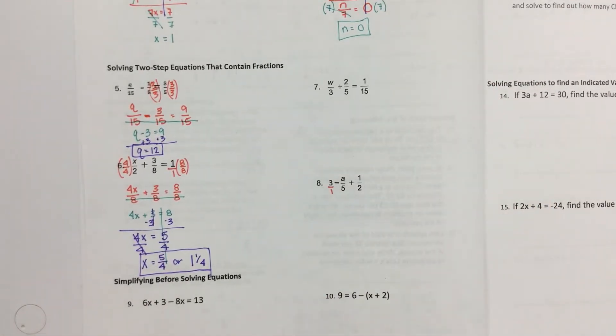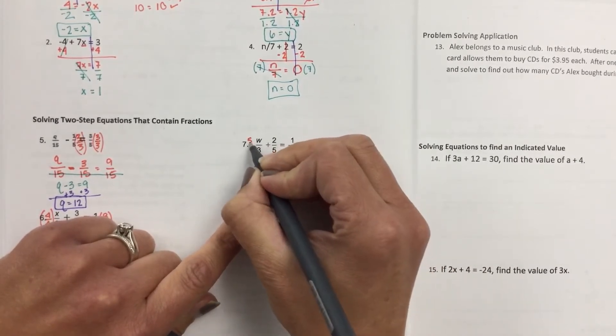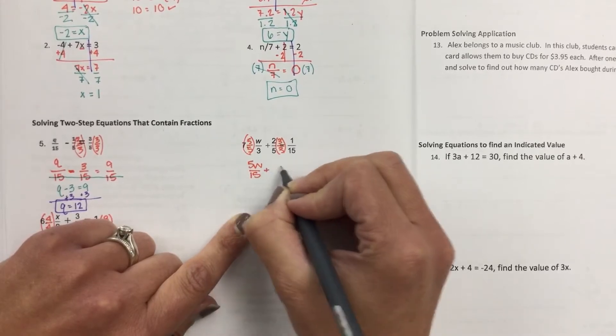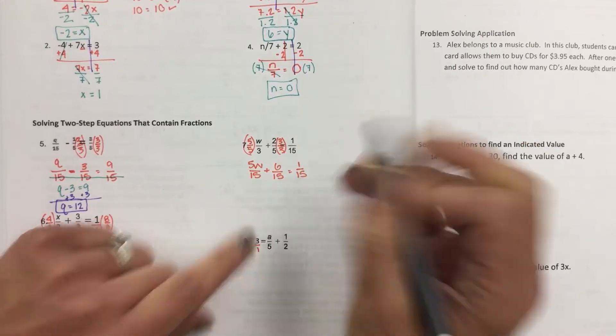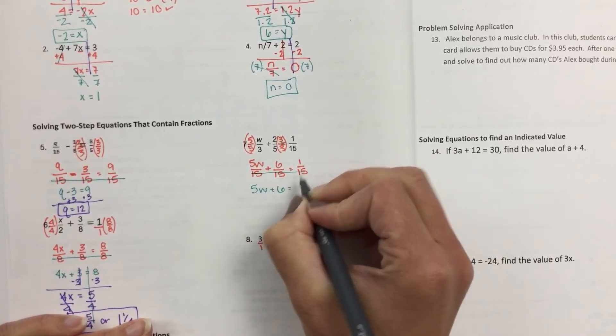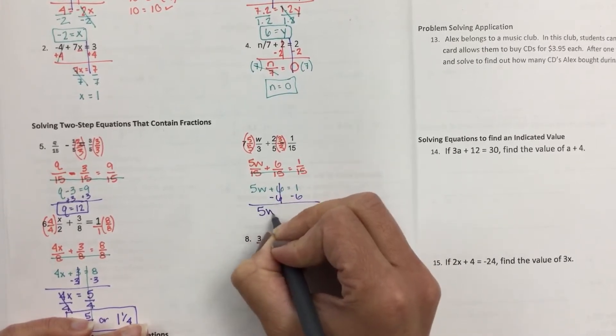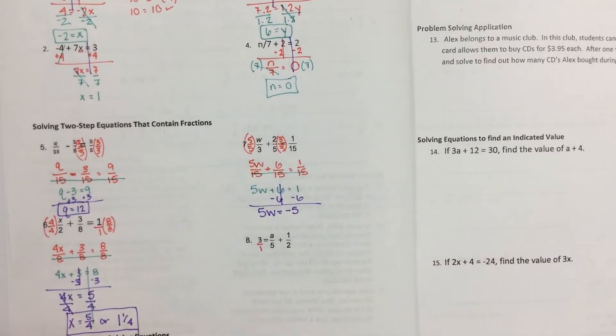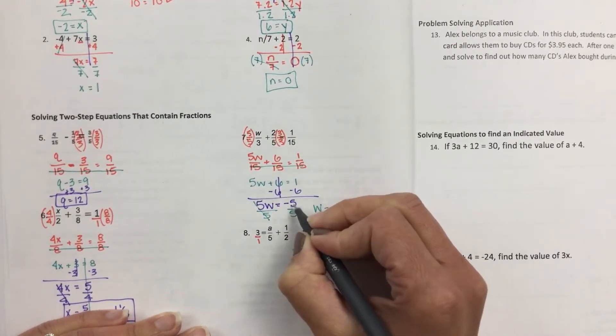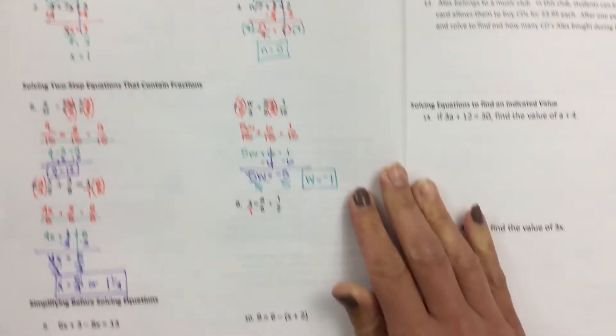Number 7. This is kind of like the first one here. 3, 5, and 15. They go all into 15. So this one I'm going to multiply by 5s. This one I'm going to multiply by 3s. And then I don't have to touch the other one. So 5w over 15 plus 6 over 15 equals 1 over 15. And you forget about the bottom. 5w plus 6 equals 1. Minus 6 on both sides. 5w equals negative 5. And your last step. Divide by 5. W equals 5 divided by 5 is 1. Negative 5 divided by positive 5 is a negative 1.